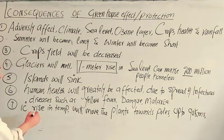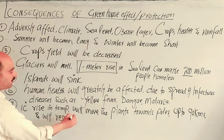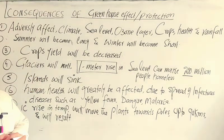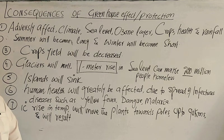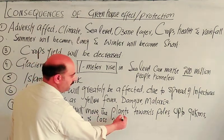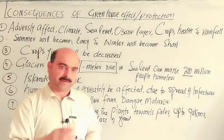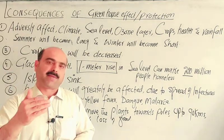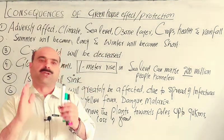This plant migration toward the poles will result in a 33% loss of food. The agricultural zones will shift, crops in current regions will be lost, and if global warming and the greenhouse effect are not controlled, this food loss represents a critical risk to food security worldwide.